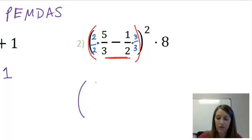I multiply fractions straight across. 2 times 5 gives me 10, over 2 times 3 gives me 6, minus 1 times 3 gives me 3, over 2 times 3, which gives me 6.